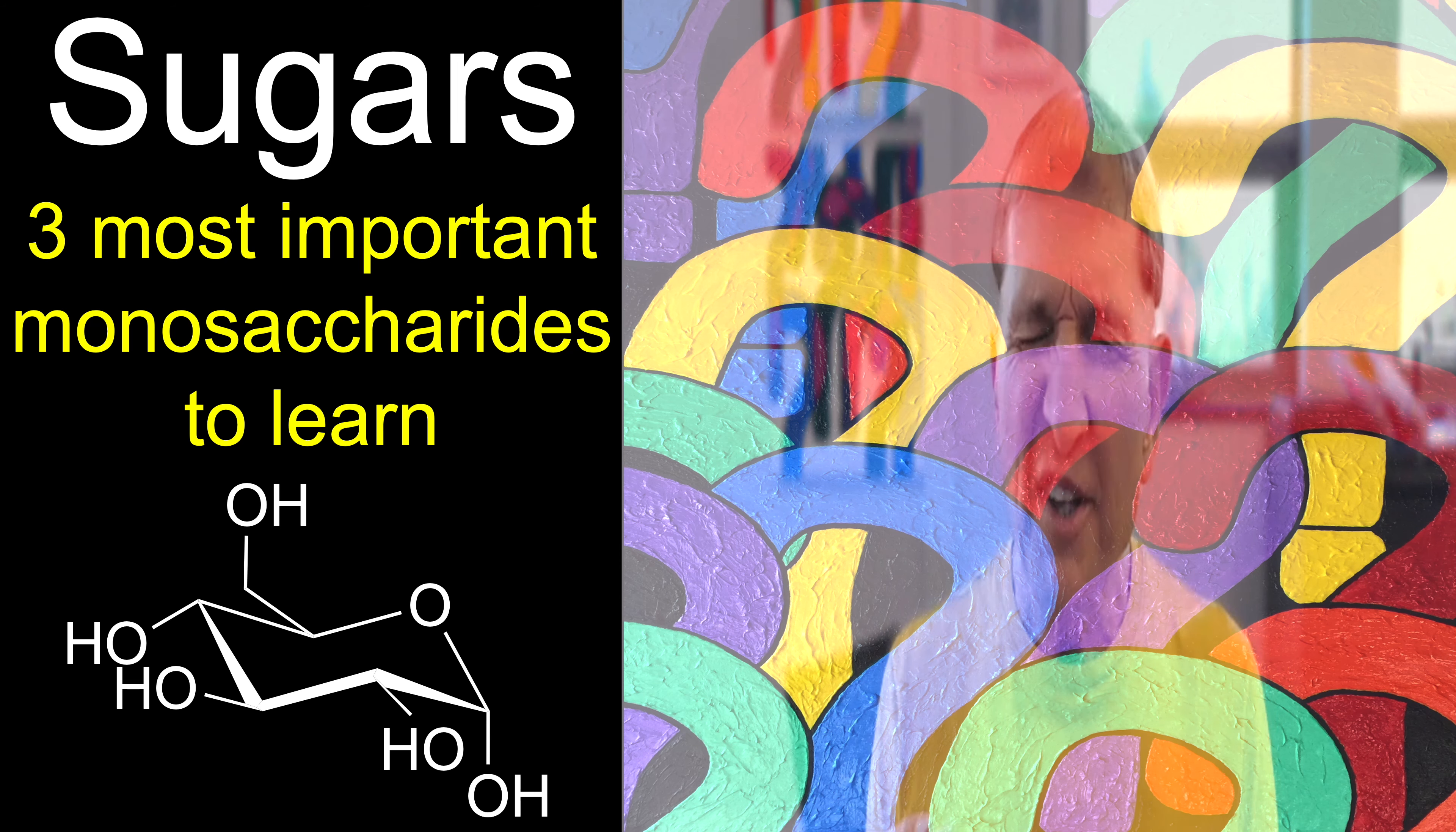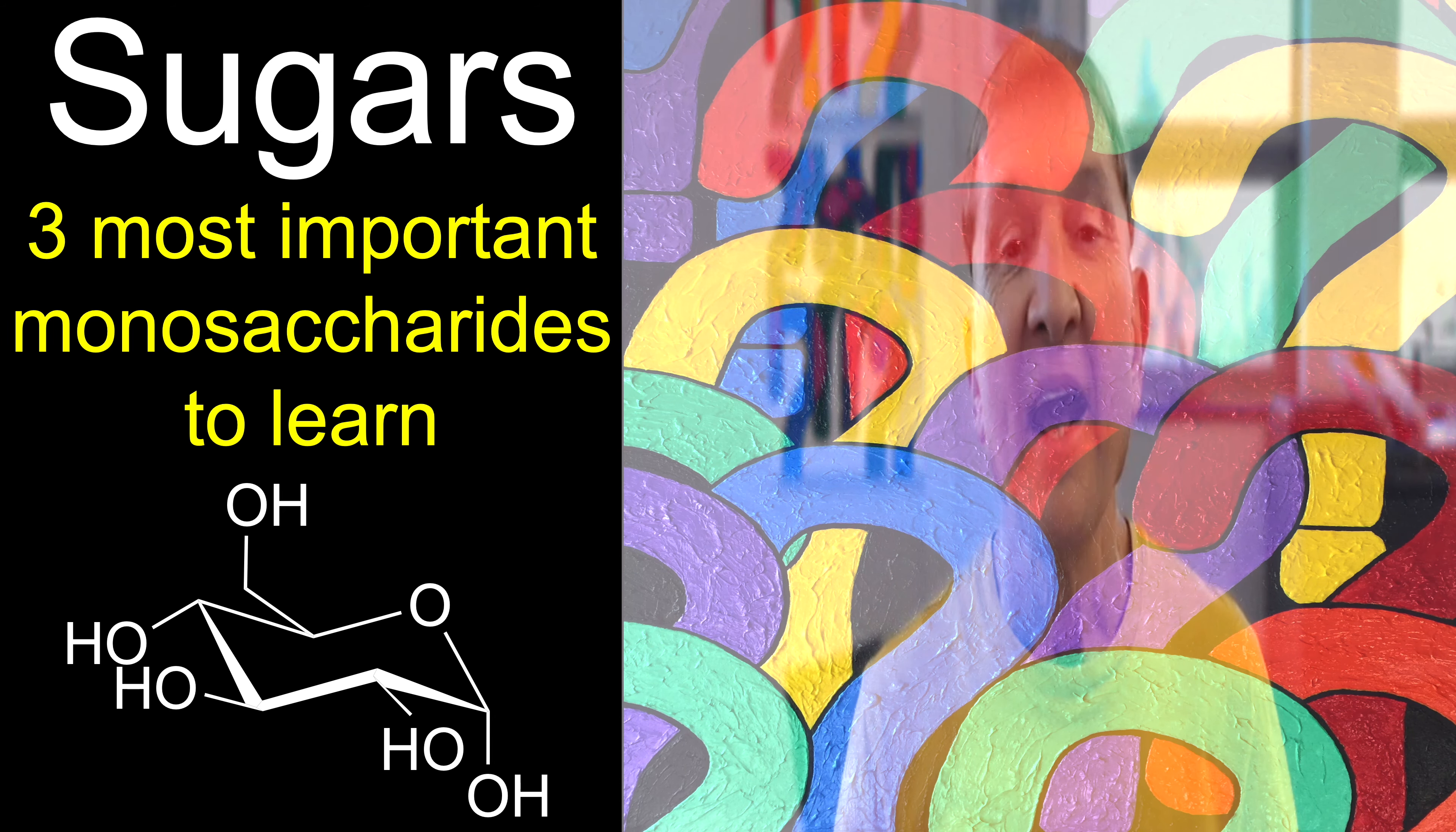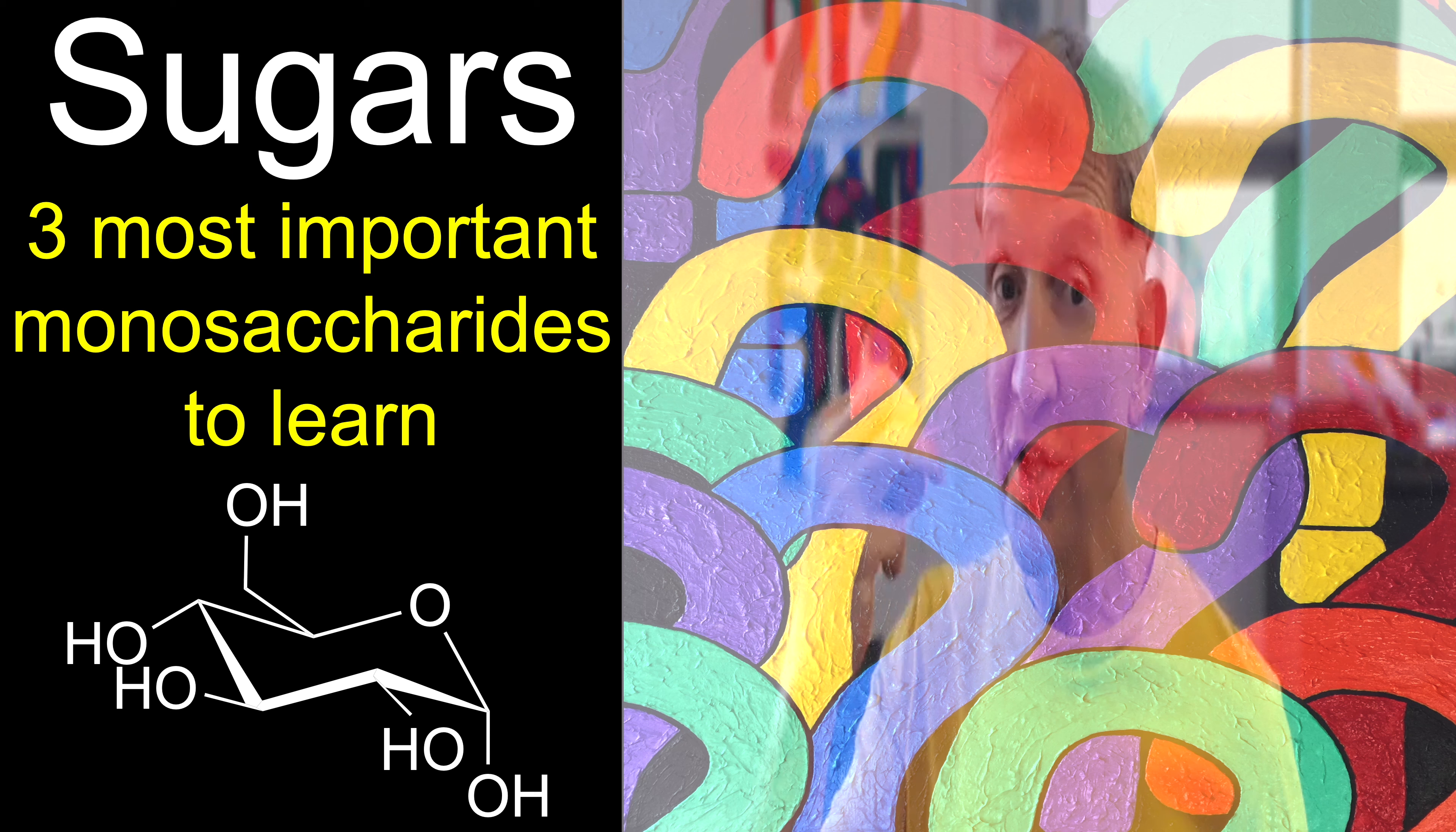Sugars. What are the really important ones to remember? I don't suggest you remember Eidos and goodness knows what. I'm suggesting you learn three structures and you're in great shape.